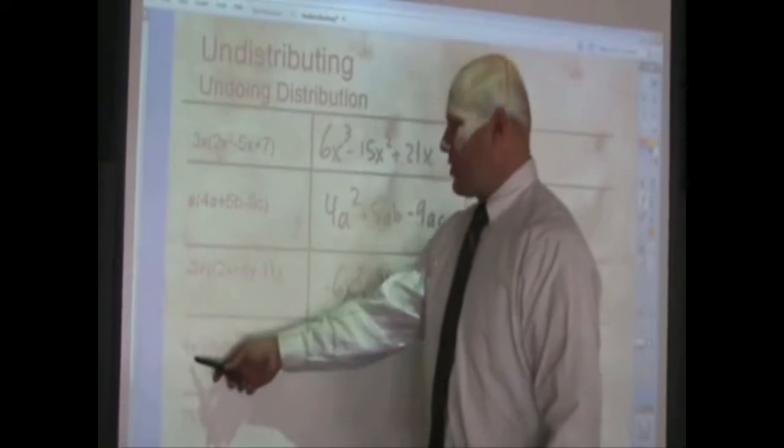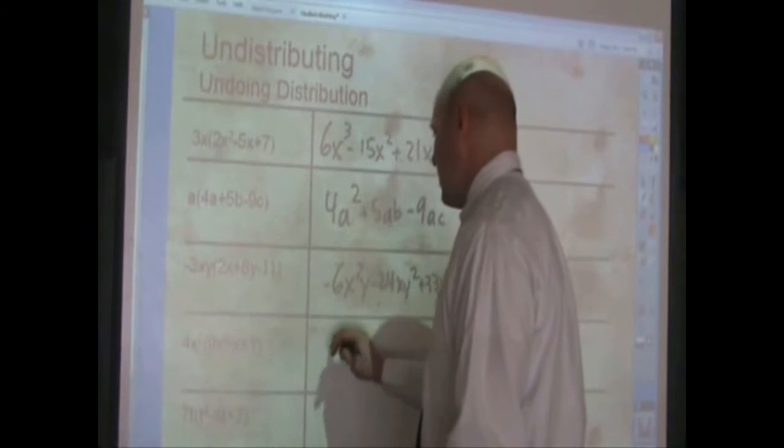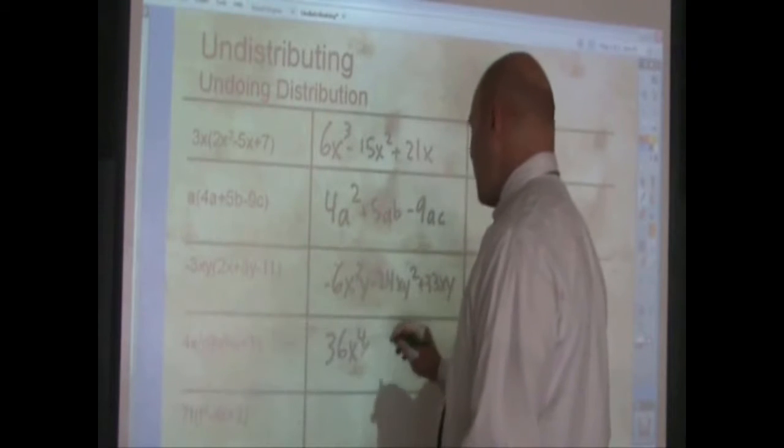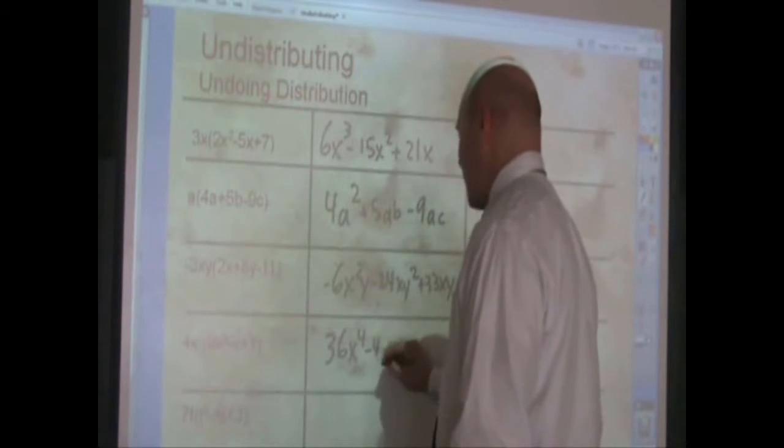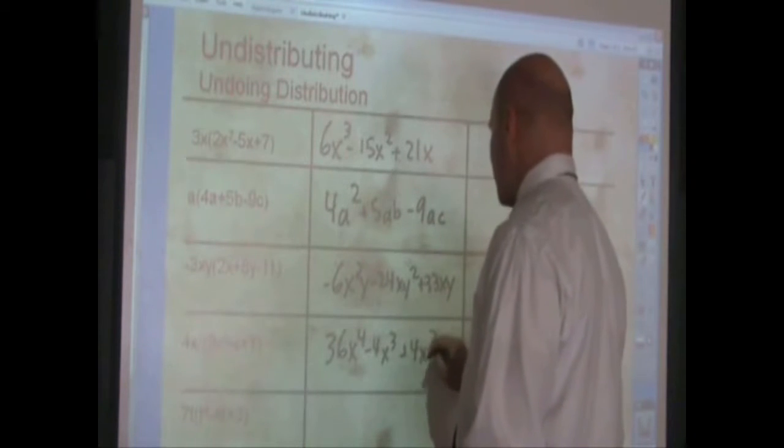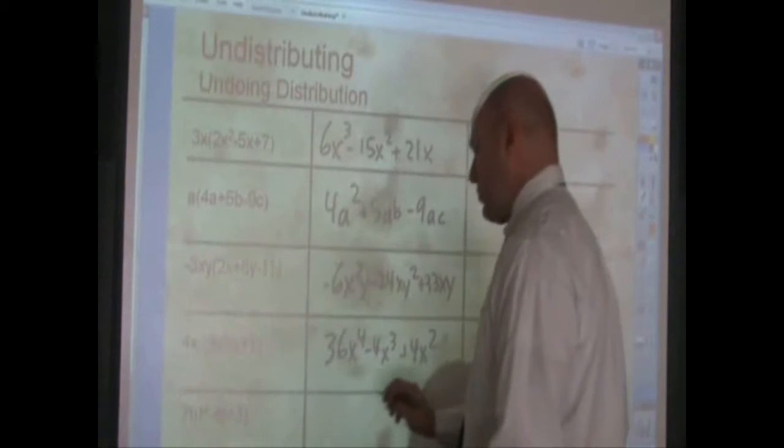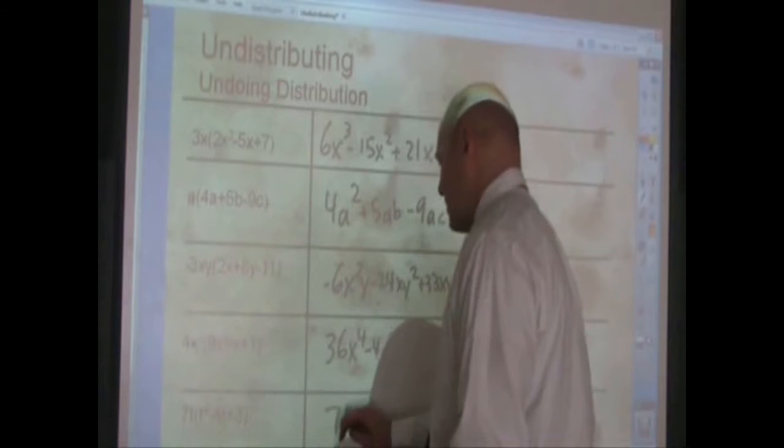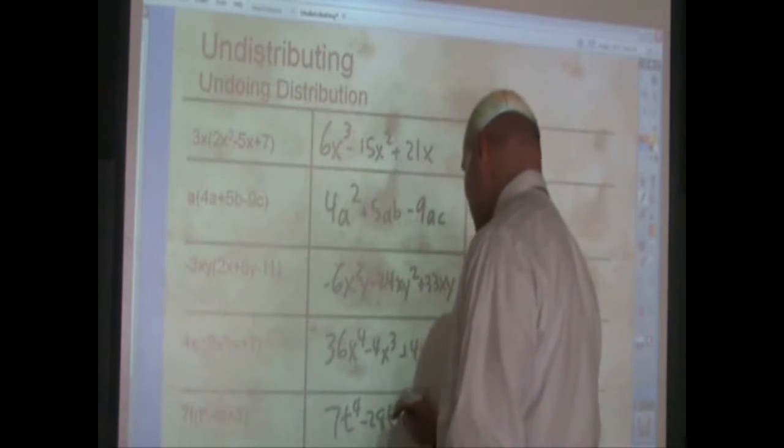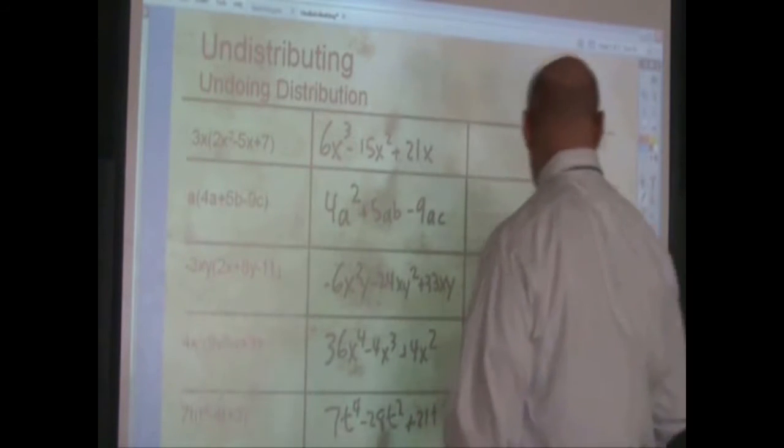Next distribution, 4x squared times the quantity 9x squared minus x plus 1. 4x squared times 9x squared is 36x to the fourth. 4x squared times the opposite of x is negative 4x to the third, and 4x squared times 1 is 4x squared. And lastly, 7t times t cubed minus 4t plus 3 makes 7t to the fourth minus 28t squared plus 21t.